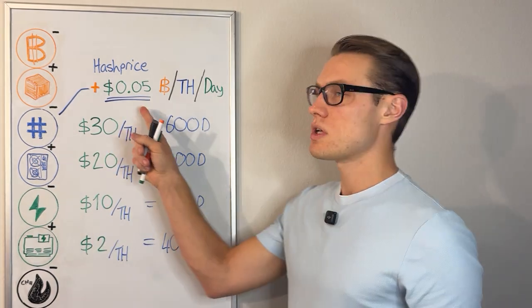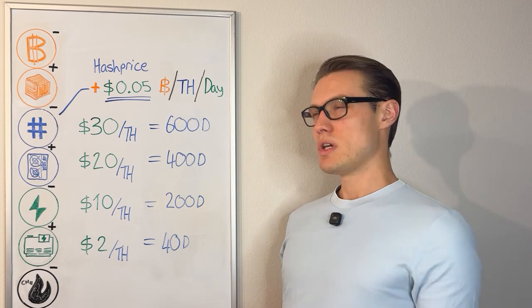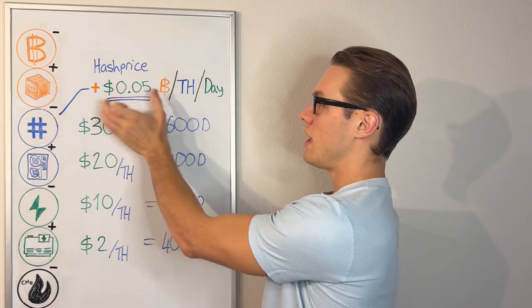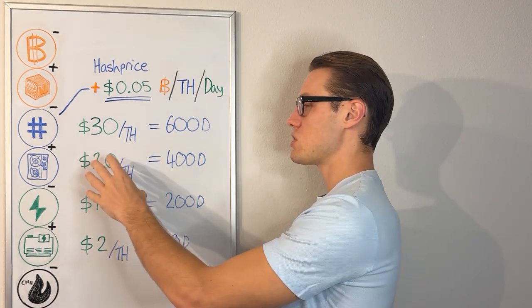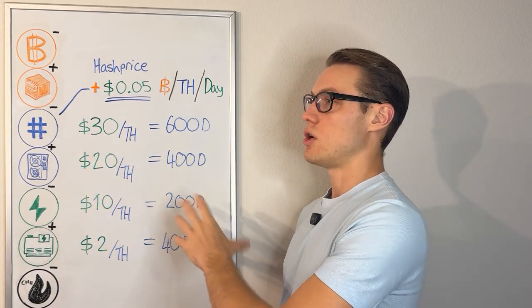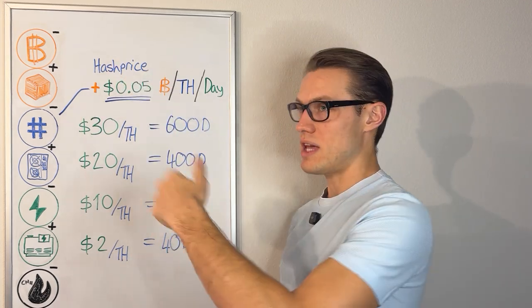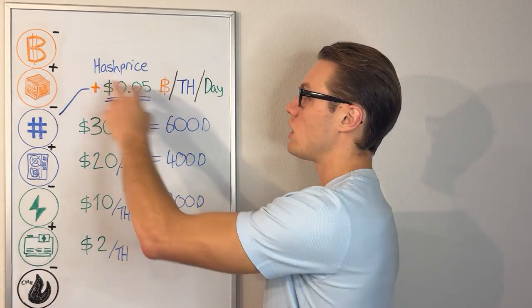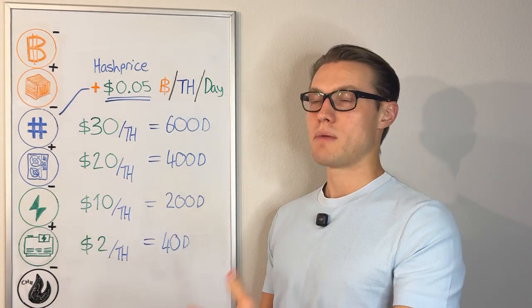There are new products and market services such as Luxor, which is more institutional level stuff, where you can lock hash price into forward contracts. So you could buy a machine, deploy it with an operator, and if it's thousands of terahashes or into petahash with serious volume, you can lock this rate into contracts. You're just looking for that uptime and execution of the operation and you've already locked in a certain hash price.